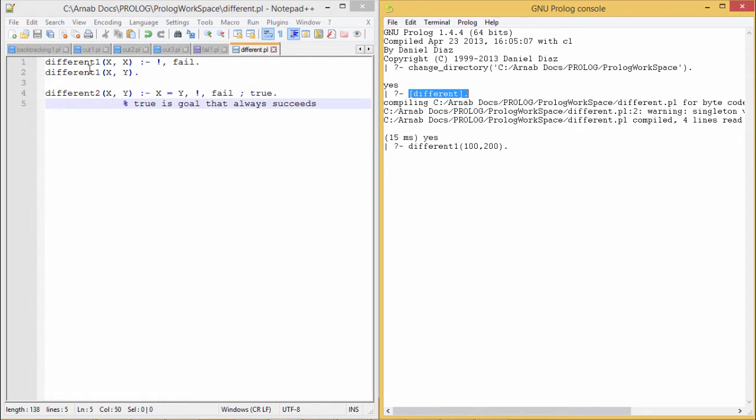Different one, I am executing these clauses right now. We have given the values 100 and 200. The values are different, so I am getting yes as answer. But if I put here 100 and 100, in that case I shall be getting no as answer. Accordingly, it is working fine.